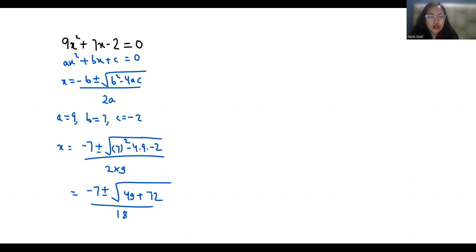So x = (-7 ± √121) / 18. So x = (-7 ± 11) / 18. So x₁ = (-7 + 11) / 18 and x₂ = (-7 - 11) / 18.